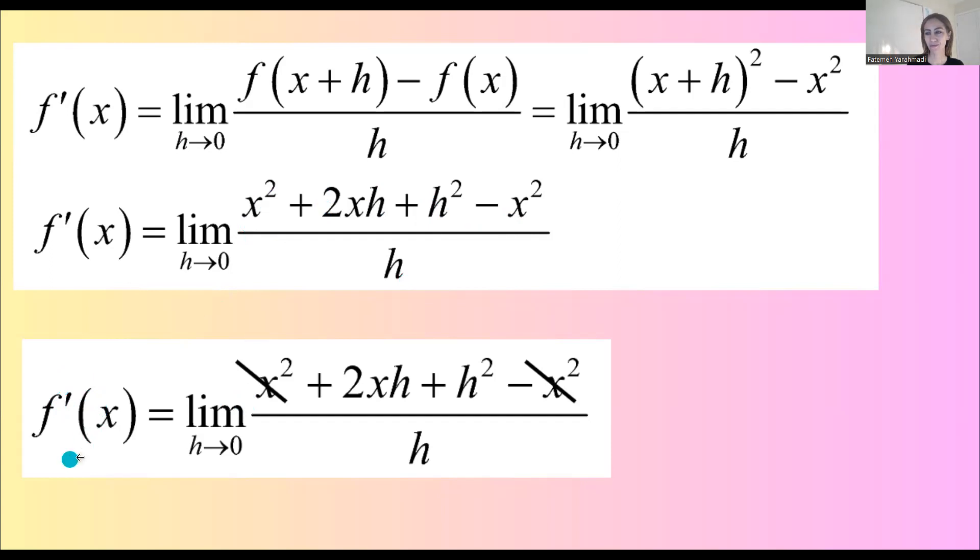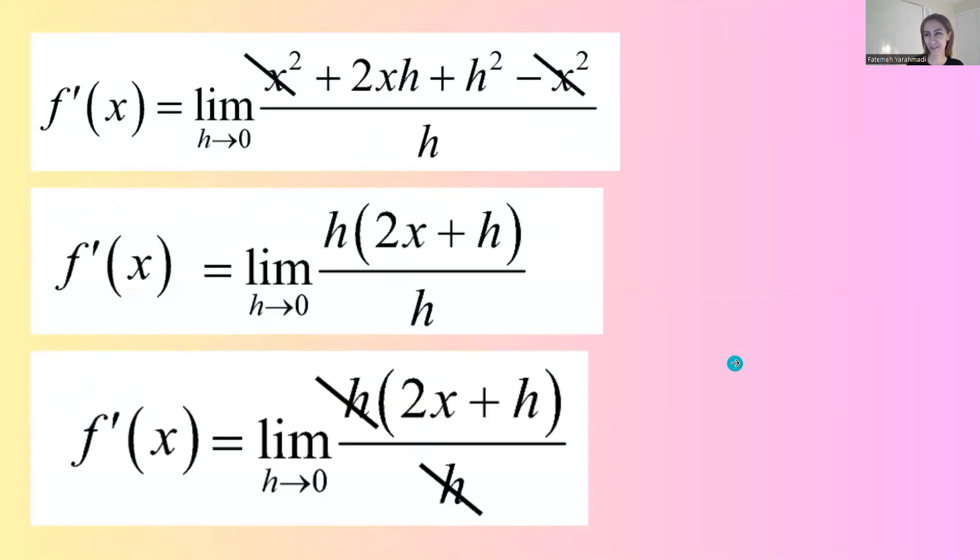f prime of x is the limit of 2xh plus h squared divided by h. Do not cancel out h yet. We need to factor out h.